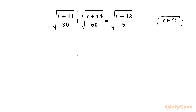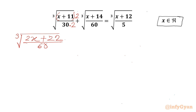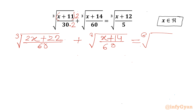I will multiply the first radicand numerator and denominator by 2, so I will multiply by 2 in the denominator also. So I can write our equation: cube root of 2x, 2 times 11 is 22, 30 times 2 is 60, plus cube root of x plus 14 over 60, equal to cube root of x plus 14 over 60.